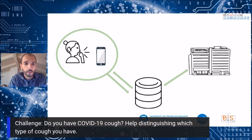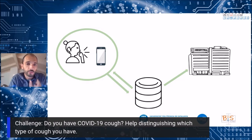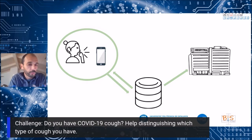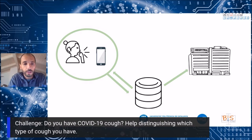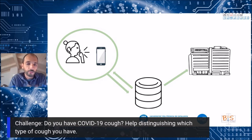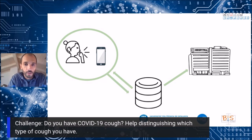Since we are using a cell phone, we can also interact with the user through a chatbot and extract additional information such as age, gender, and medical conditions that may be relevant. So we can get the audio and also get additional information.